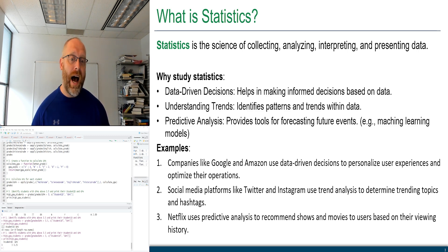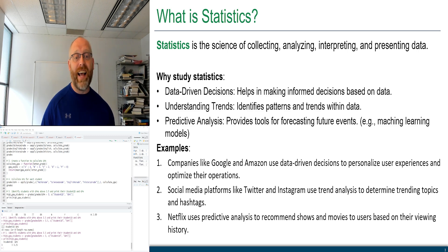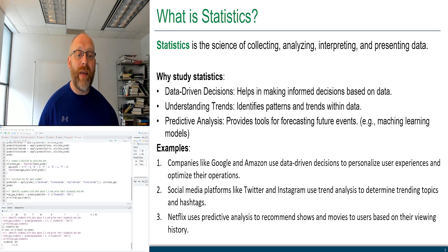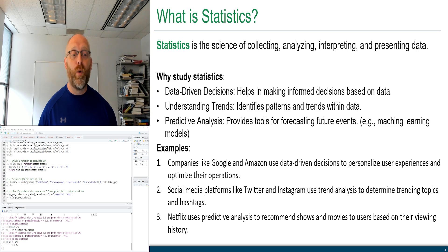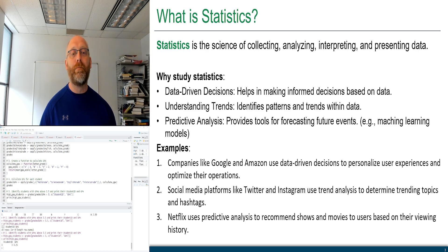Examples of predictive analysis in action: companies like Google and Amazon use data-driven decisions to personalize user experiences and optimize operations. Social media platforms like Twitter/X and Instagram use trends to analyze trending topics and hashtags. Netflix uses predictive analysis to recommend shows and movies based on viewing history. Statistics plays a major role in data analysis and is essential for interpreting complex data and for model building, forming the basis of machine learning algorithms.